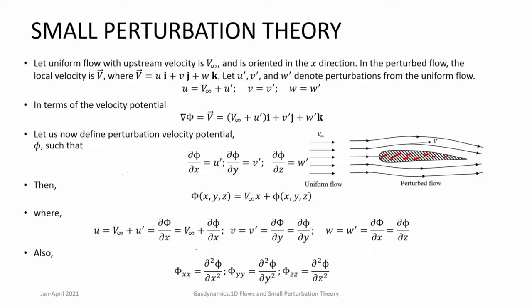We define a perturbation velocity potential φ (small phi) such that ∂φ/∂x = u', ∂φ/∂y = v', and ∂φ/∂z = w'. Then the total velocity potential Φ in the x-direction becomes V∞·x plus the perturbation potential φ. So ∂Φ/∂x = V∞ + u', which you can verify by differentiation: ∂φ/∂x = u' and ∂φ/∂y = v', and similarly for w'. We can then define φ_xx, φ_yy, φ_zz, and so on.